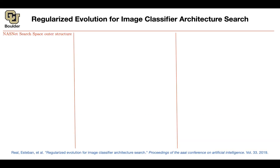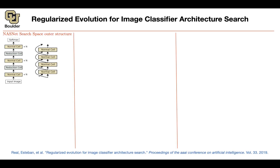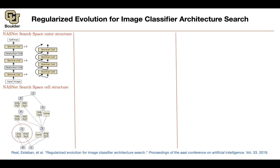We're going to stick to the search space defined in the previous slide — exactly the same search space with normal cells and reduction cells. We're going to look for the cell structure, which is the same as before. The question is how we optimize these, being the entire cell but doing it one at a time. The choices we have to make are these connections — where they're coming from — these operations, and whether you're going to concatenate or add.